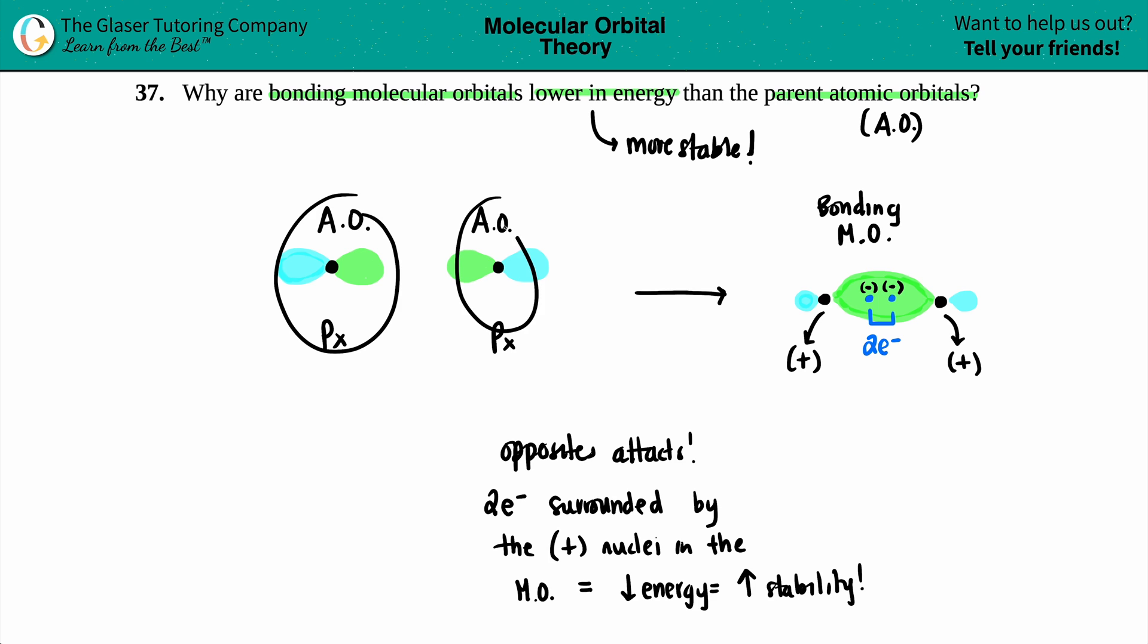Over here for your atomic orbitals, you just have like one electron with one positive charge, and you've got another electron with another positive nuclei. But once you are now interacting with two nuclei, two positives, you drop your energy. And that is the answer.